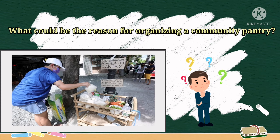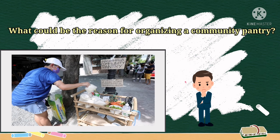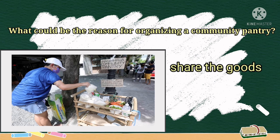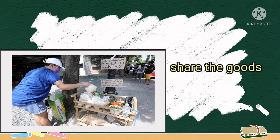What is the idea behind this community pantry? The idea behind the community pantry was that people could take as much as they need and donate whatever they can. What could be the reason for organizing a community pantry? The reason or purpose of this community pantry is to share goods to those who are in need. The image shows information to readers that helps us understand the message of the author. Like reading a text, we were able to associate the images and understand its idea.